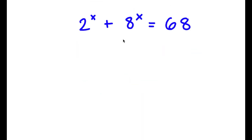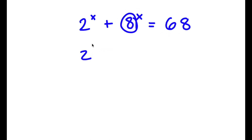In this problem I have 2 to the power of x plus 8 to the power of x equals 68. First we rewrite 8 as 2 to the power of 3.